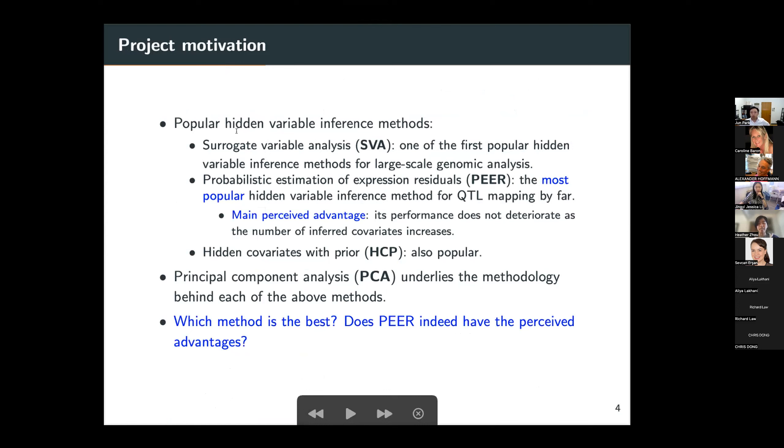So as I was saying, PEER is one of the popular hidden variable inference methods now. SVA, which stands for surrogate variable analysis, is one of the first popular hidden variable inference methods for large scale genomic analysis. PEER stands for probabilistic estimation of expression residuals, and it's the most popular such method for QTL mapping by a lot.